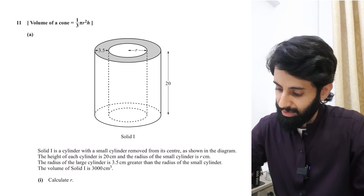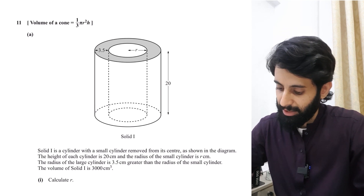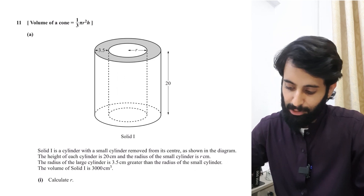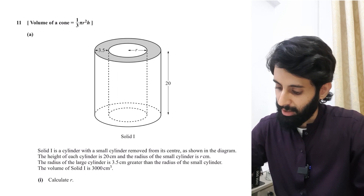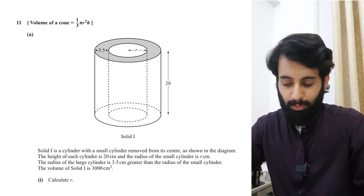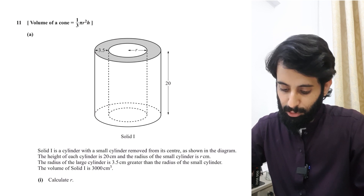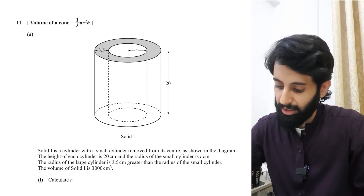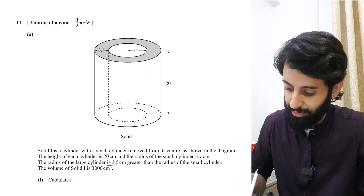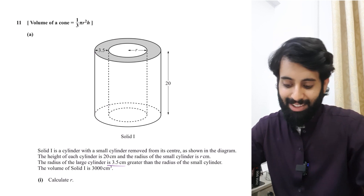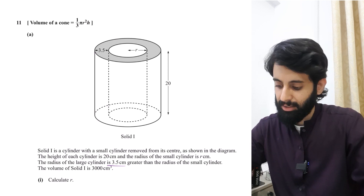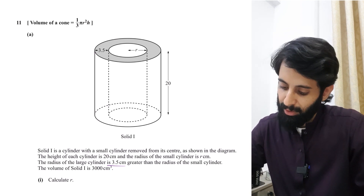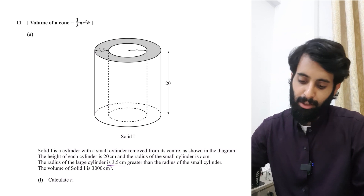Solid one is a cylinder with a small cylinder removed from its center. The height of each cylinder is 20 centimeters, the radius of the small cylinder is r centimeters, and the radius of the large cylinder is 3.5 centimeters greater than the radius of the small cylinder. The volume of solid one is 3000 centimeter cubed.